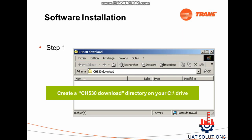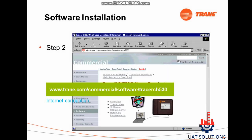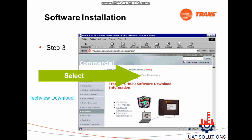Step 1: Create a folder on your C drive using the name ch530download. Step 2: Open an internet browser and go to www.trane.com/commercial/software/tracerc530. Step 3: Click on the TechView download and download the program into the folder we created on drive C.